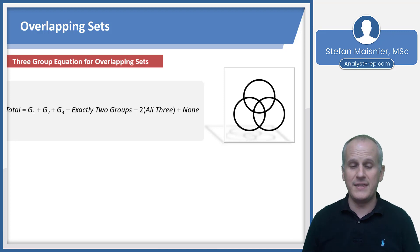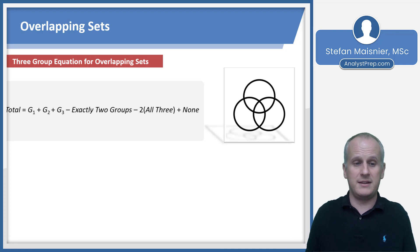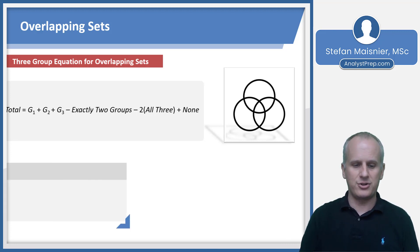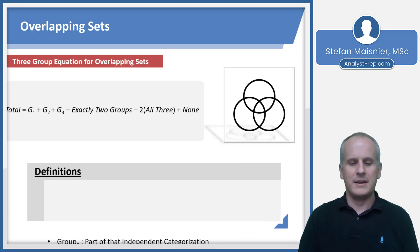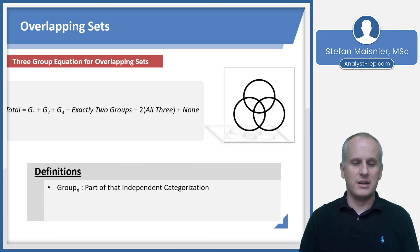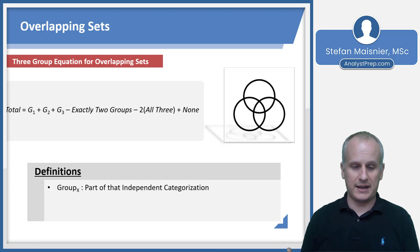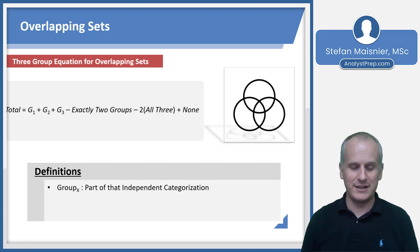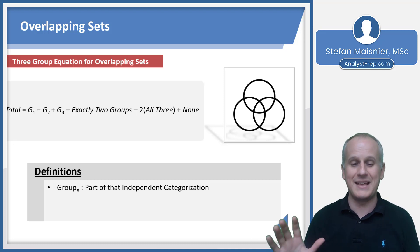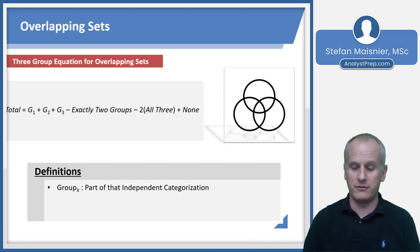Plus those that are in none, since there's always the capacity for a 'none' in a situation. Our definitions: each group is just that independent categorization — group 1, group 2, group 3, whatever it may be — and that includes the overlaps.